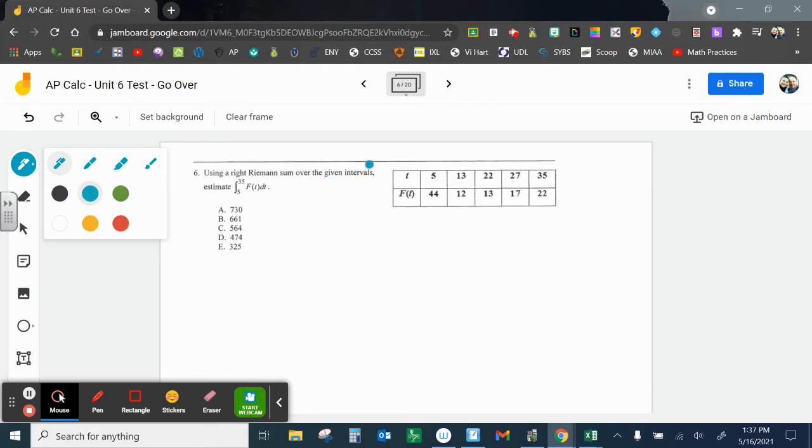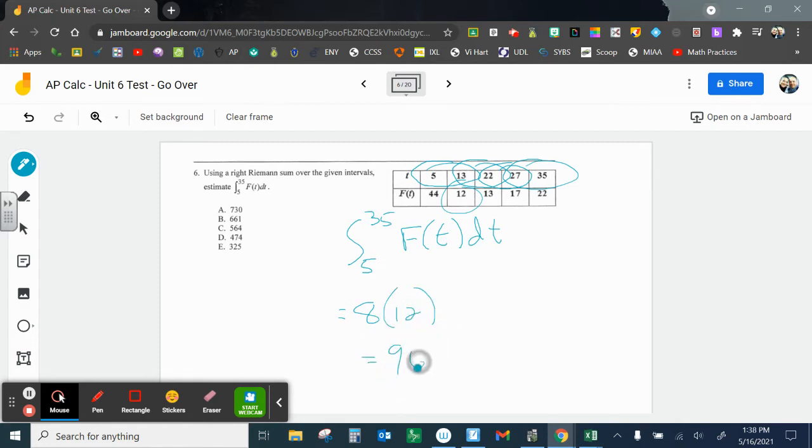Okay, here, use right Riemann sum over the given intervals. Estimate integral from 5 to 35. So I'm planning on doing 1, 2, 3, 4. So the integral from 5 to 35 of f(t) dt. And 5 to 13 is 8, but then I'm going to use the right side. 8 times 12 is 96. 13 to 22 is 9, right-hand side is 13. 90 and 27 is 117. 22 to 27 is 5, use the right-hand side, 17.